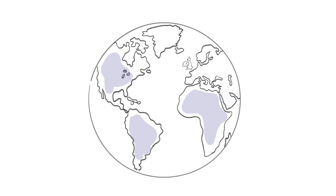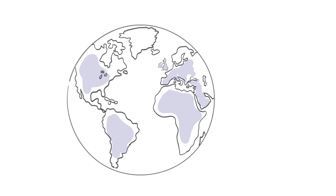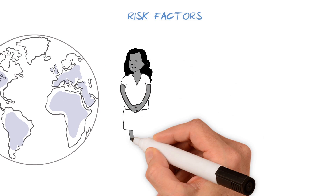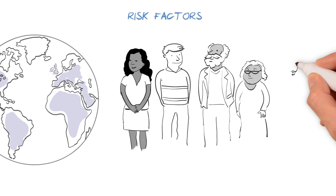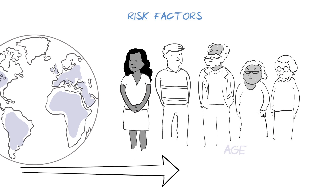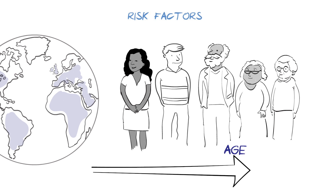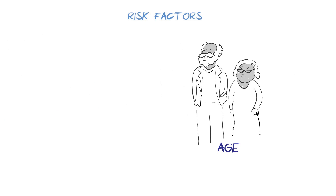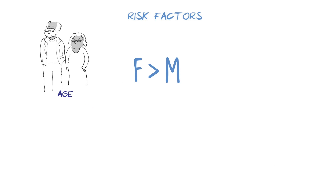Osteoarthritis is a very common, long-term condition, affecting hundreds of millions of people around the world. While it can happen at any age, it most commonly develops after the age of 50. In fact, many people as they get older will develop a degree of osteoarthritis in their joints, and around 10-20% will experience symptoms. It is also more common in women than men, and may run in families.